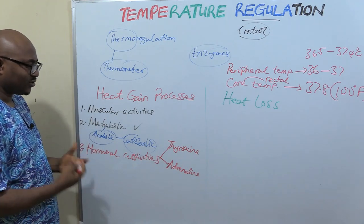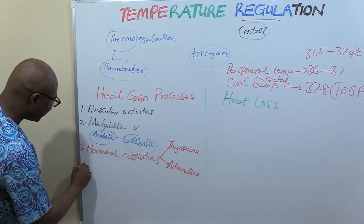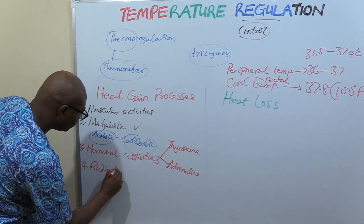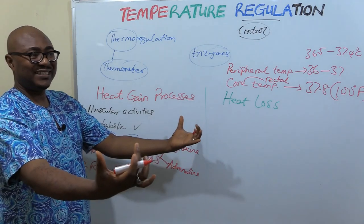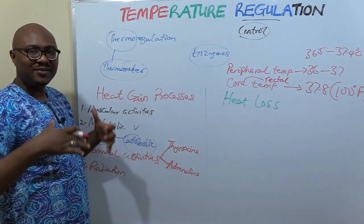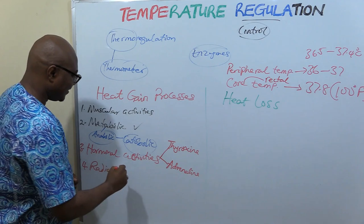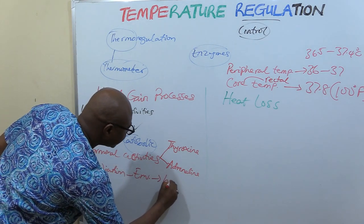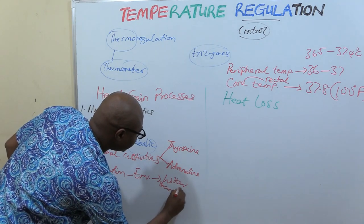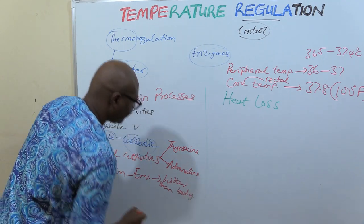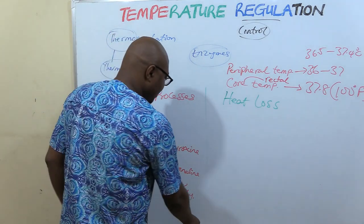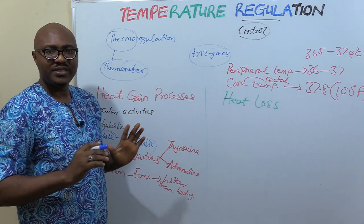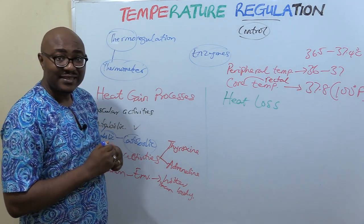Another factor that comes from outside is radiation from the environment. When the environment is hotter than the body, it will transfer heat to the body. That's what happens with environmental radiation as a source of heat gain.